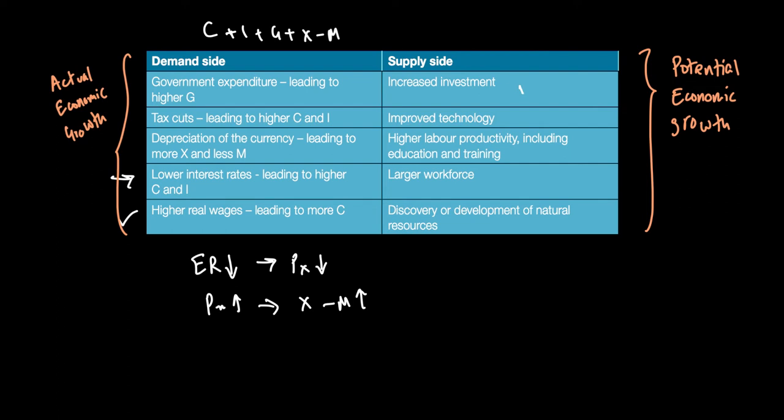For example, higher investment means more funds dedicated to the production of capital goods, which can result in more consumer and capital goods in the future.